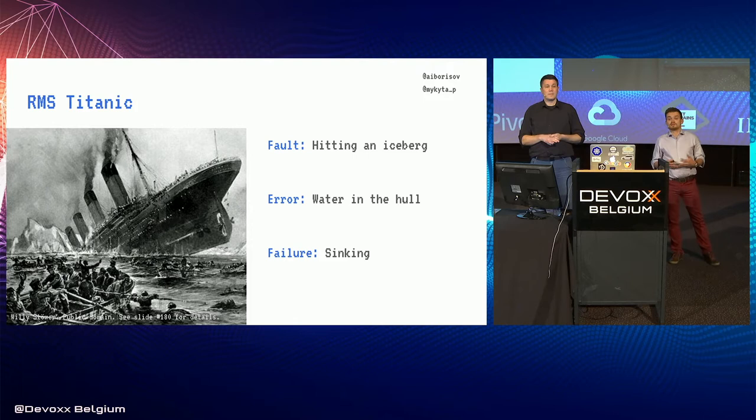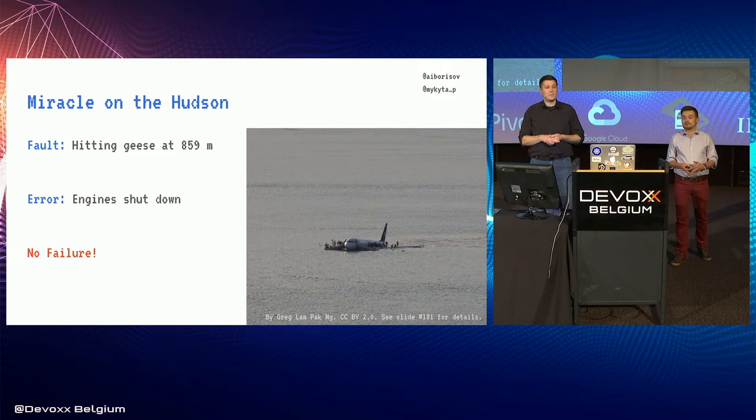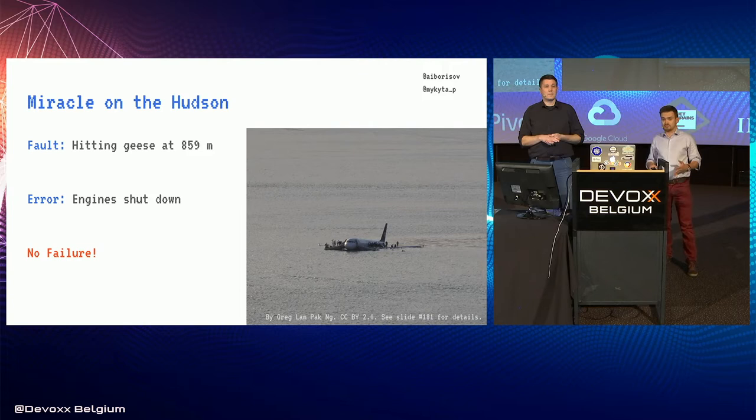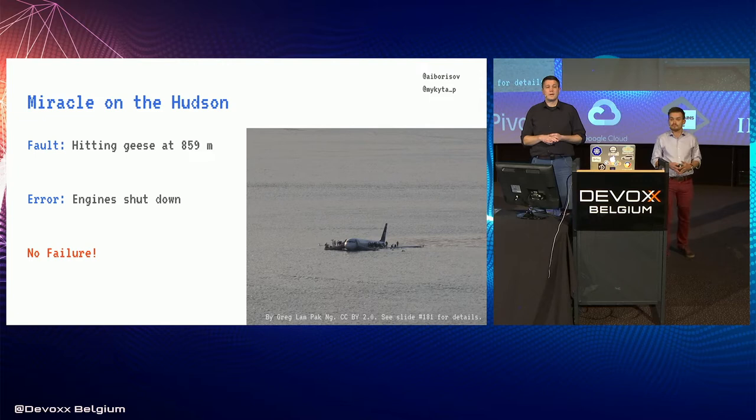They hit an iceberg — that was a fault. When water got inside the ship, that was a very visible error that led to a failure. Meanwhile, in 2009, Captain Sullenberger safely landed his plane on the Hudson River after a collision with Canada geese. It was a pretty severe and unpredictable fault. When the engines went out, it was a clear error — users on that plane definitely noticed — but it wasn't a catastrophic failure because everybody survived.